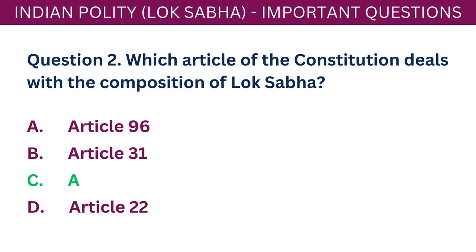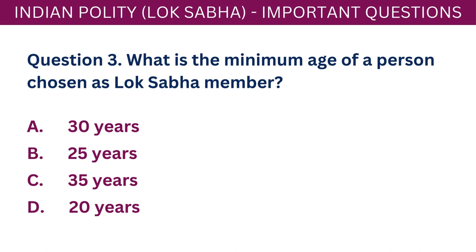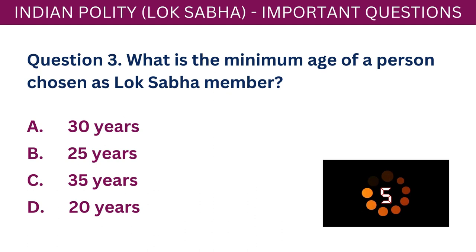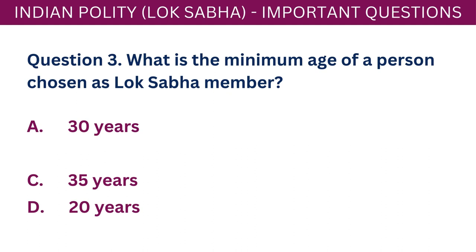Question 3: What is the minimum age of a person chosen as Lok Sabha member? A. 30 years. B. 25 years. C. 35 years. D. 20 years. The correct answer is B - 25 years.